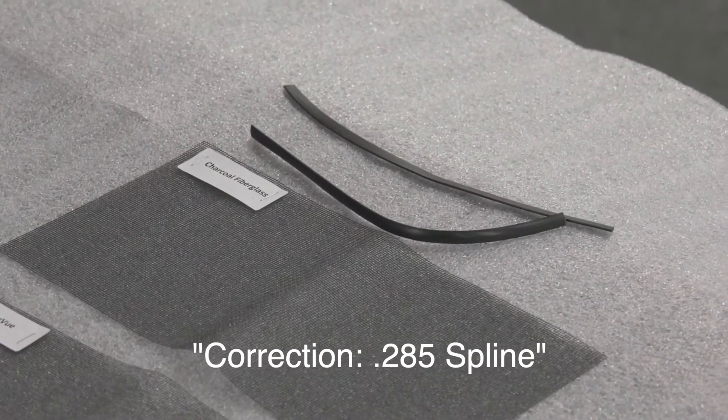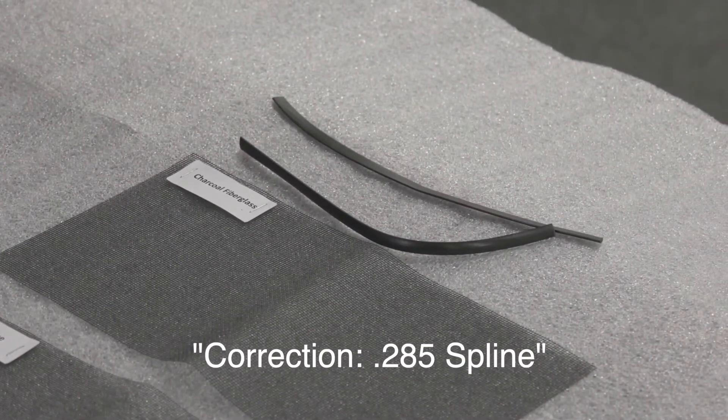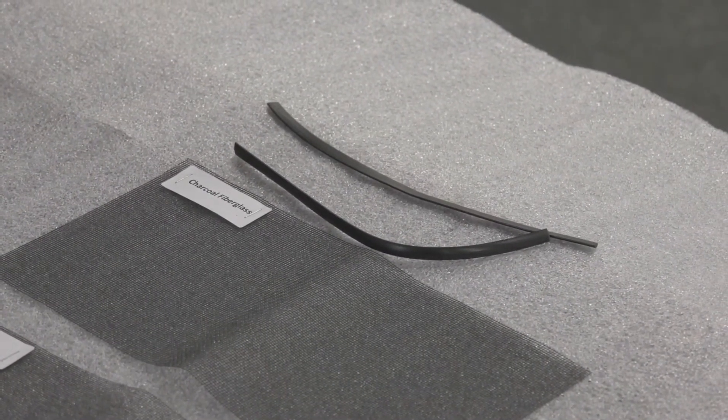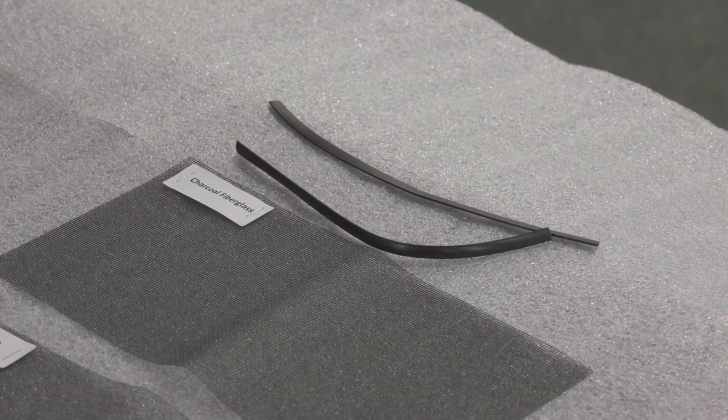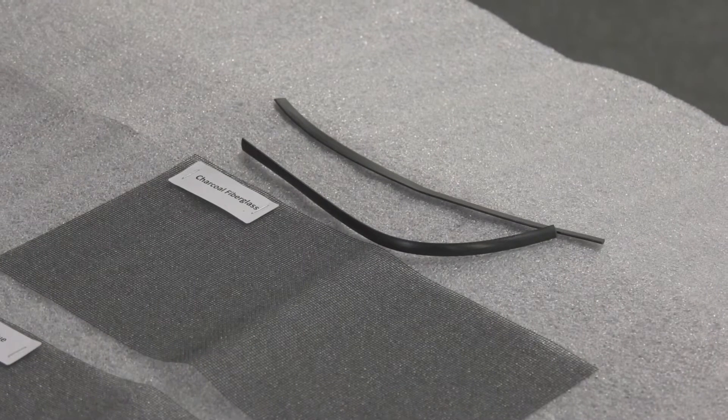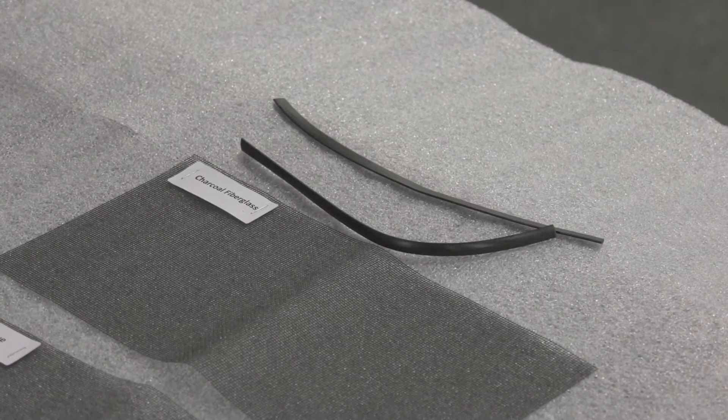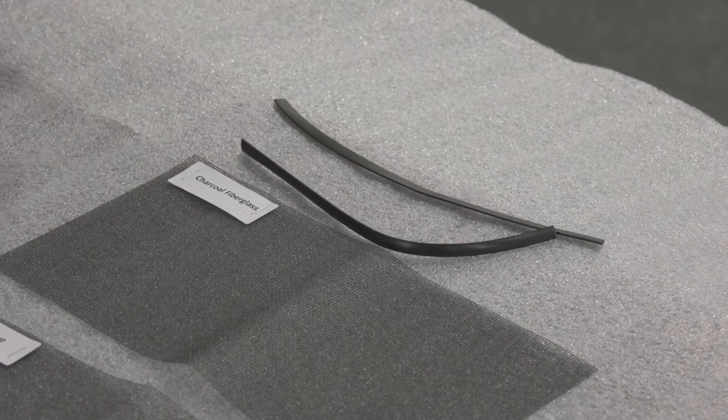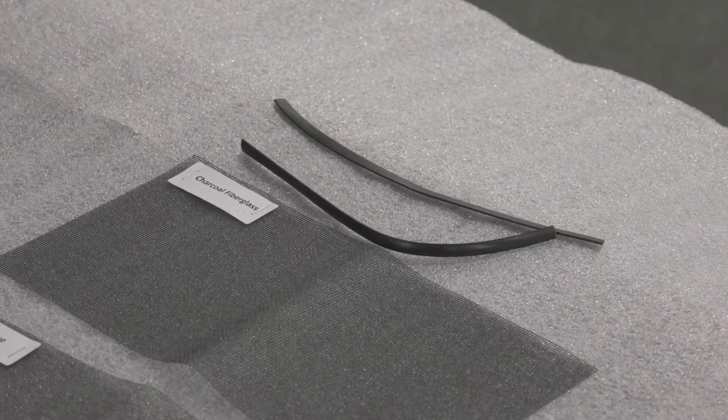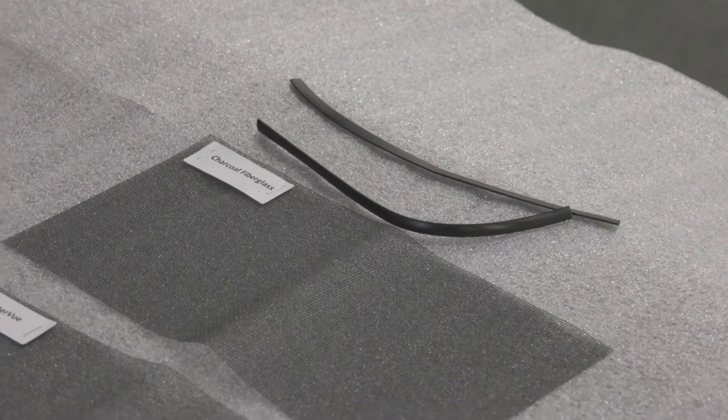DSI stocks both a 0.285 flat spline and a 0.310 flat spline. The majority of your fiberglass and standard mesh products are going to take the larger 0.310 spline, while your heavier screens like metal screens and PET screens are going to take the smaller 0.285 flat spline. DSI stocks both.